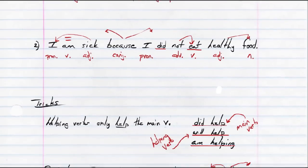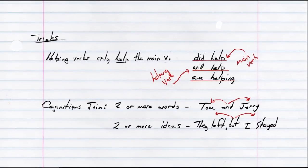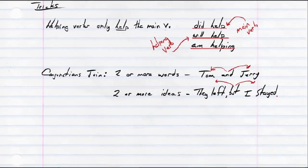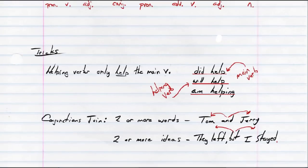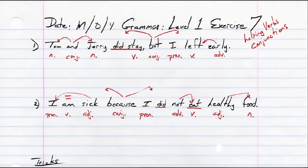Down below, I have some notes for you. I'll leave that up at the top so you can finish up. So, some tricks of this. Helping verbs only help the main verb. And most of the ways they do that is they tell you when the verb is happening. So, with the verb help, I have did help, will help, am helping. The main verb is help. Helping verb is did, will, and am. Down below that, conjunctions join. They either join two or more words, as in Tom and Jerry, or two or more ideas. They left, but I stayed. Okay. Those are the tricks. Those are the things that you should know. That's it for the notes today. Go ahead and pause it if you need to finish these up. I'll give you the answers up above. Here are the answers. And that's going to be it for exercise number seven. I will see you at eight.